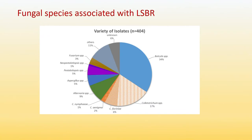To address this, in the past two years we collected samples of late season bunch rots from different vineyards and identified the isolates to different species. As you can see, Botrytis and Colletotrichum are the major species associated with late season bunch rots. However, there are other species that were pretty frequently isolated, including Pestalotiopsis, Aspergillus, as well as Alternaria species.